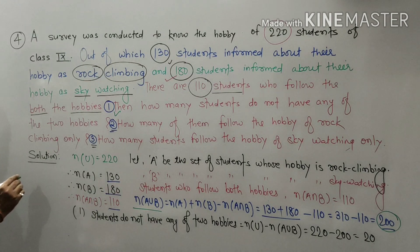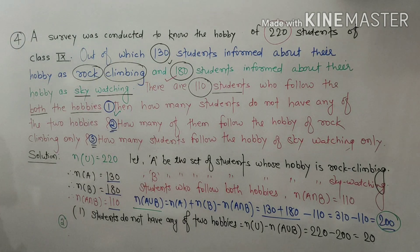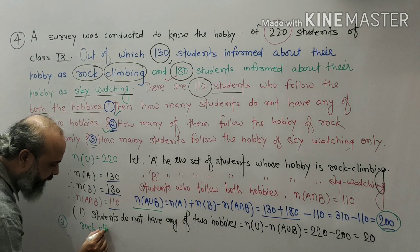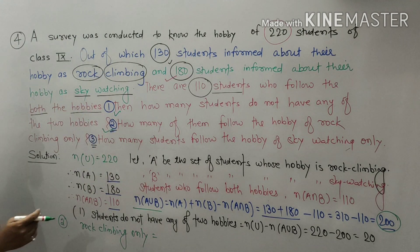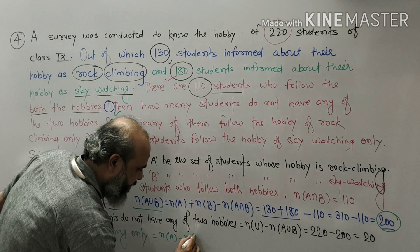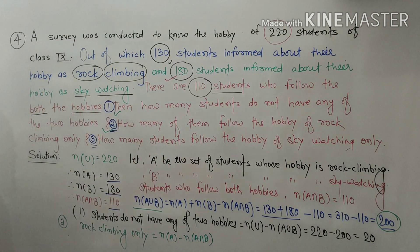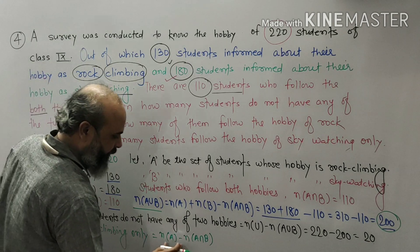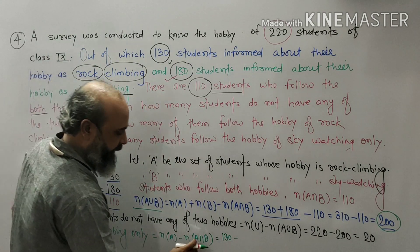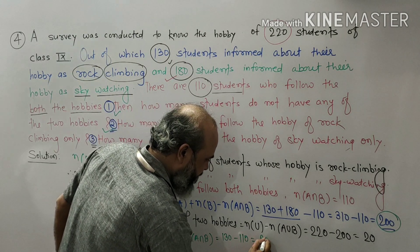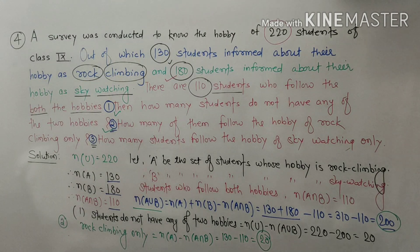The second answer is: how many students follow the hobby of rock climbing only? For rock climbing only, it is number of A minus number of A intersection B, which is 130 minus 110, and this equals 20. So 20 students have only rock climbing as their hobby.